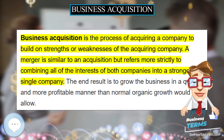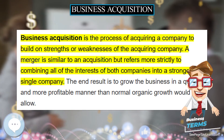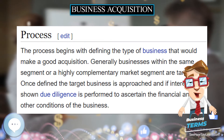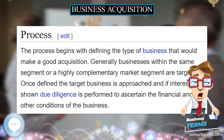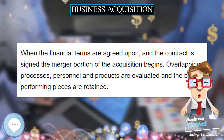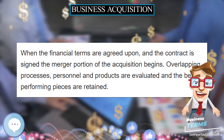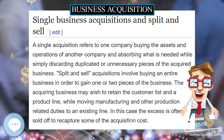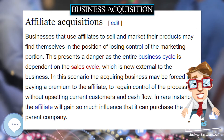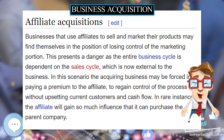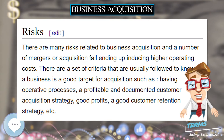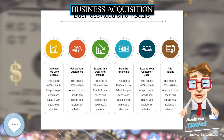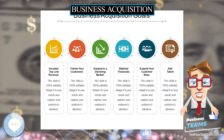Affiliate acquisitions occur when businesses that use affiliates to sell and market their products find themselves losing control of the marketing portion. This presents a danger, as the entire business cycle is dependent on the sales cycle, which is now external to the business. The acquiring business may be forced into paying a premium to the affiliate to regain control of the process without upsetting current customers and cash flow. In rare instances, the affiliate will gain so much influence that it can purchase the parent company.